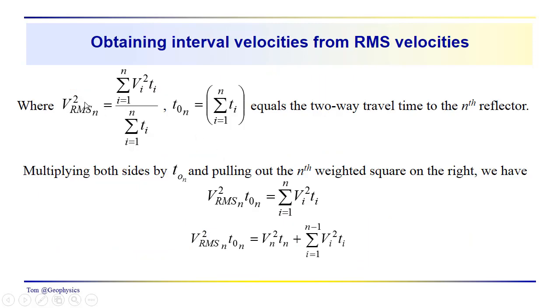So we square both sides of that relationship. We get VRMS squared. It's equal to just this ratio. And then note, as we said, that this t_0n, the two-way travel time down to the nth interface, just equals this sum. So we can substitute that in this relationship here.